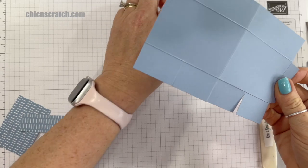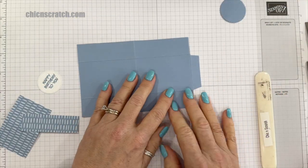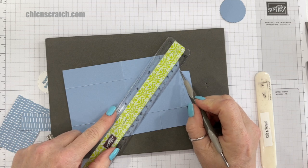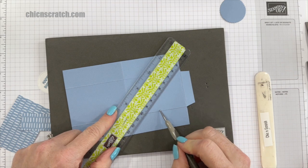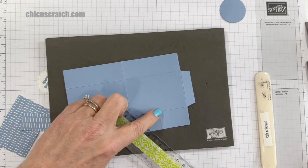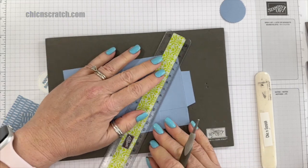Okay, the next step, we want to get our stylus and a ruler and what we're going to do is make a score line from here to this score line there, and then from here to here. So just like the bigger box.